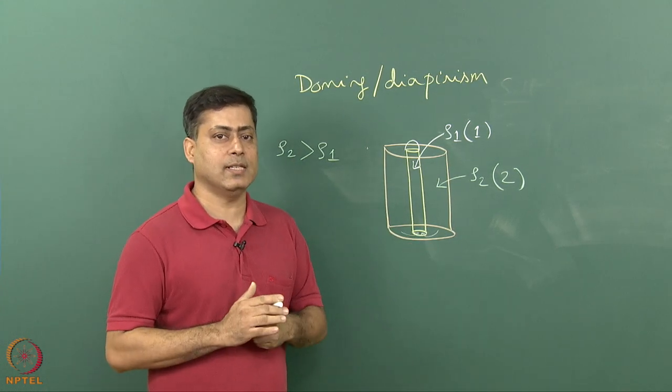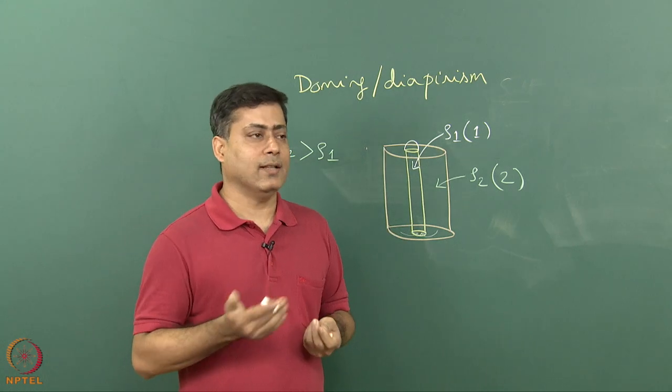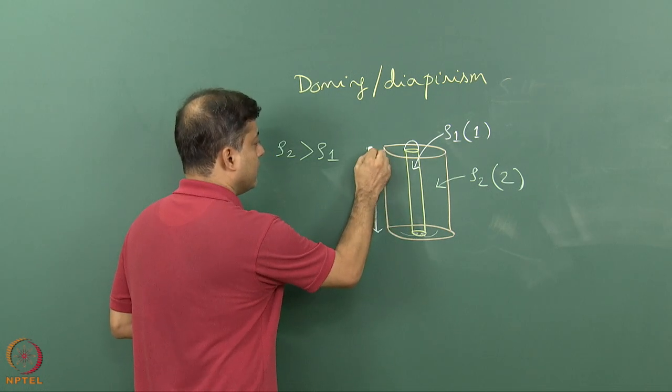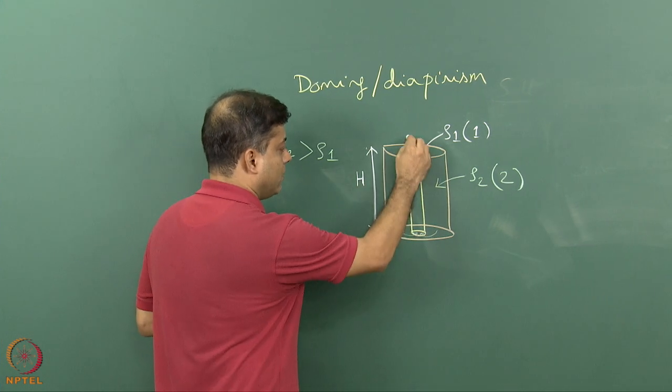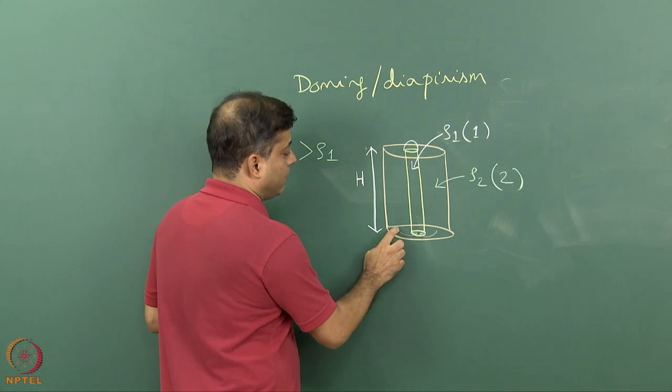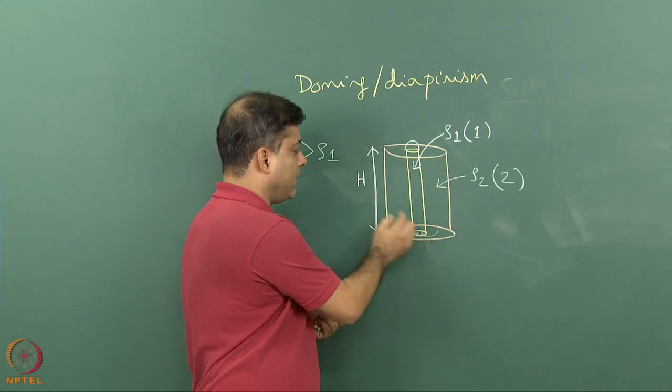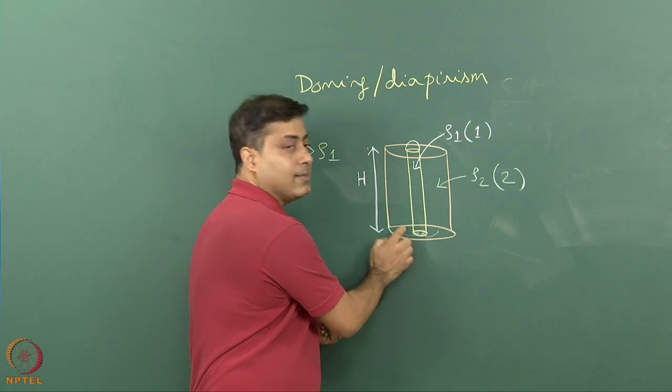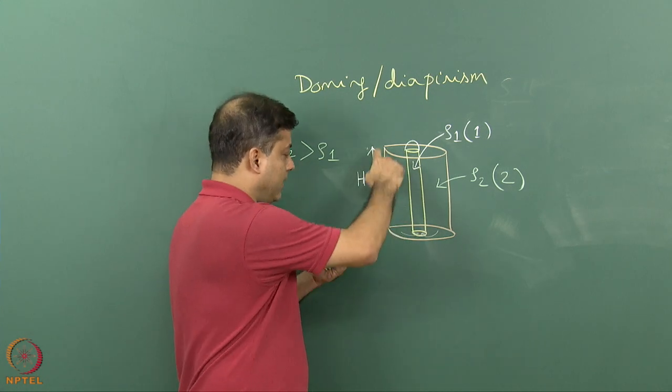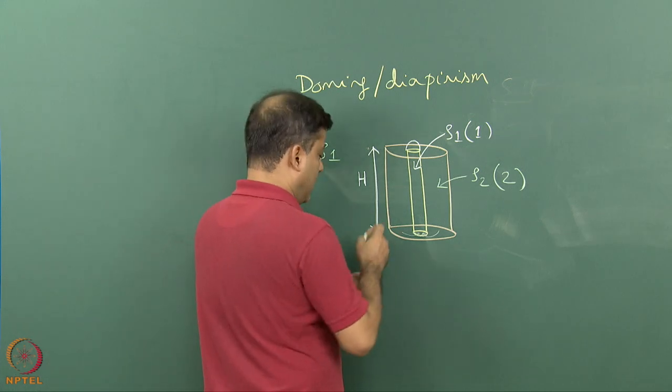This is one of the oldest models. However recently there have been many other publications where this model can be upgraded. There are several cases of faulting and other structural disturbances that can affect the dome. Now think that this long cylinder has a height of H and the inside cylinder also has a height of H. This cylinder is kept slightly up and not touching the basal surface so that fluid two can push fluid one.